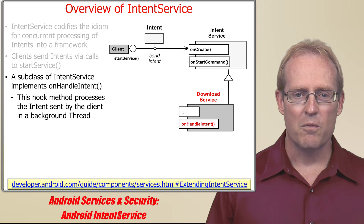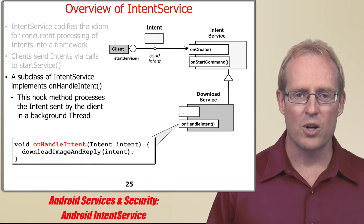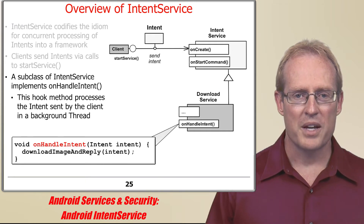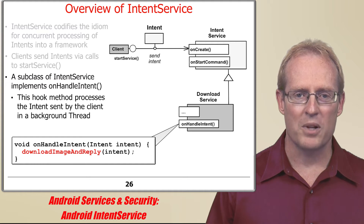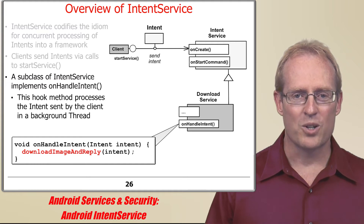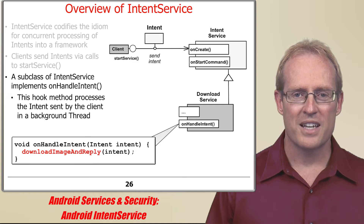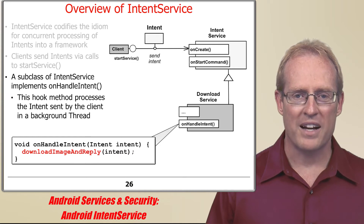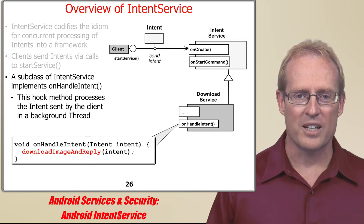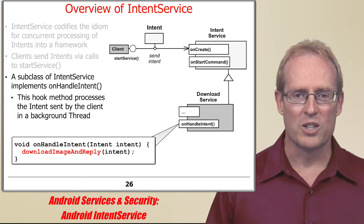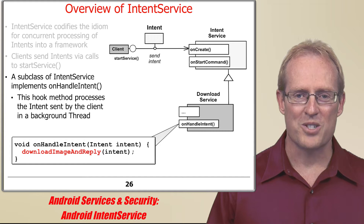For example, the onHandleIntent hook method for the download service simply calls downloadImageAndReply to concurrently retrieve the requested image, store it in a file on the device, and pass the path name back to the download activity that originally called startService.